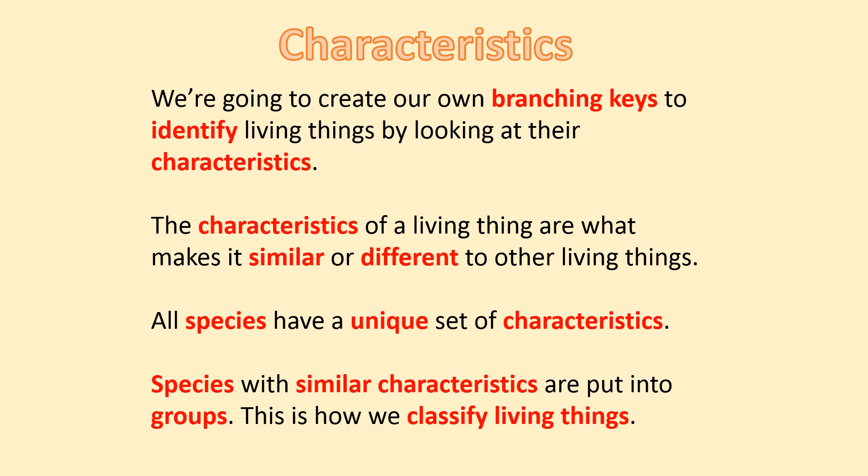Characteristics. We're going to create our own branching key to identify living things by looking at their characteristics. The characteristics of a living thing are what makes it similar or different to other living things. All species have a unique set of characteristics. Do you recall what species means? It's a group of living things that are able to reproduce, and unique means special. Species with similar characteristics are put into groups. This is how we classify things.